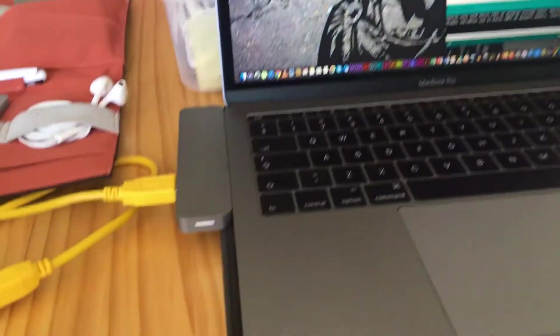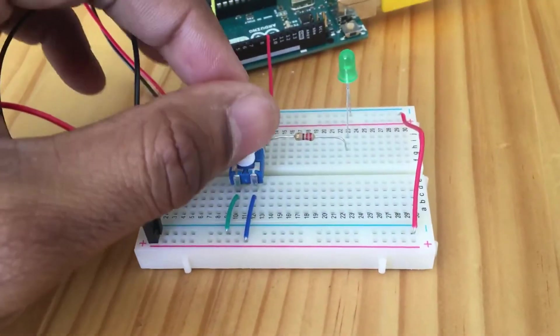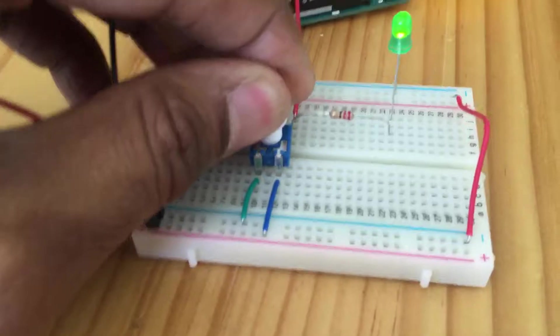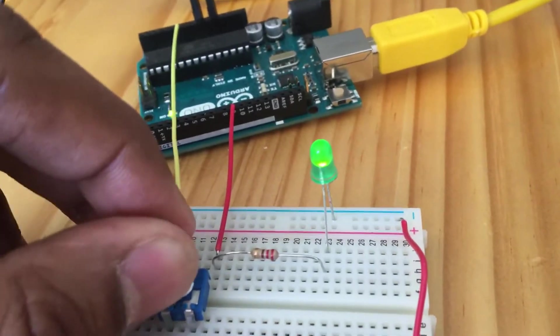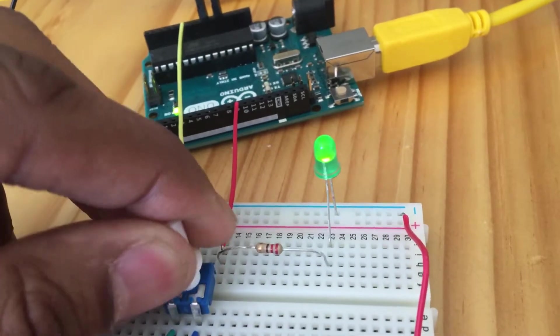I've already loaded up my sketch in Arduino IDE, and this is what happens. As you can see, as I turn the potentiometer, the LED will increase or decrease in brightness.